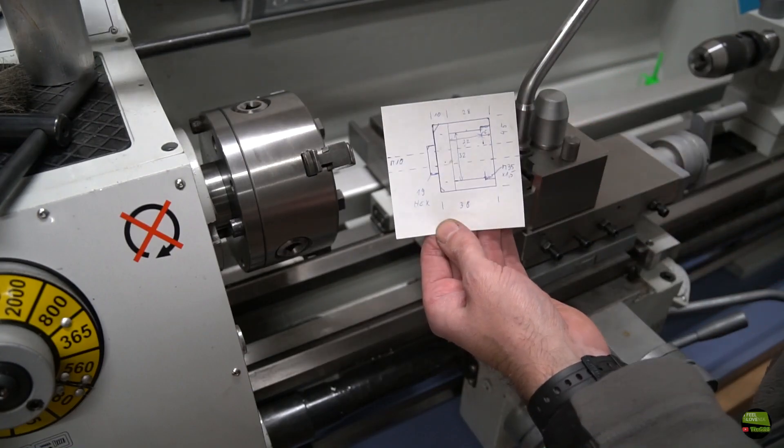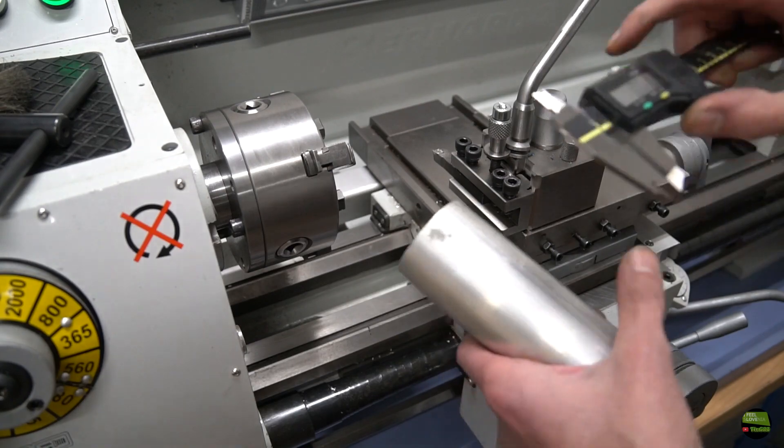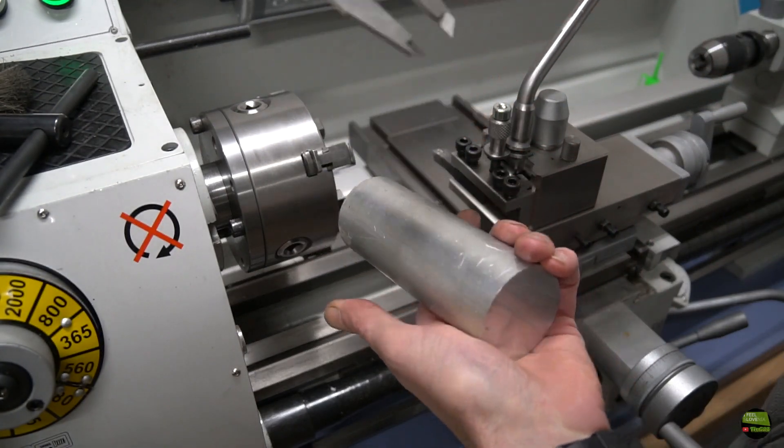I'll make it out of aluminum because it's easier to machine and should do the job just fine. Plus I have a piece of just the right dimension. So firstly face it and then turn to diameter.